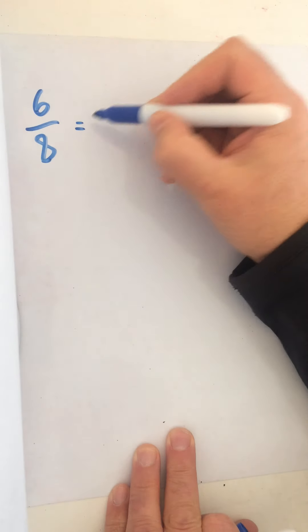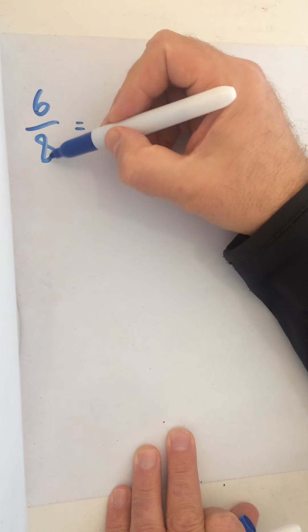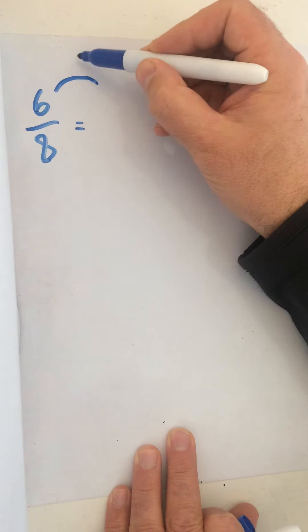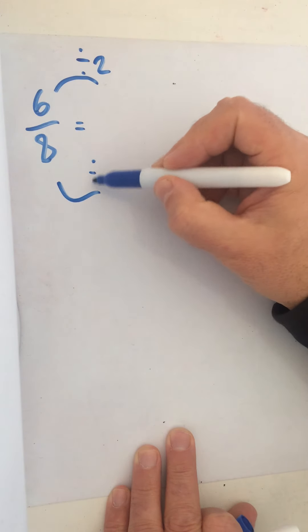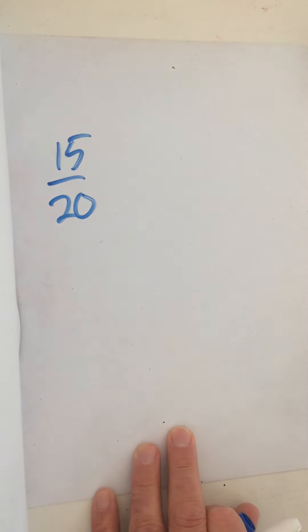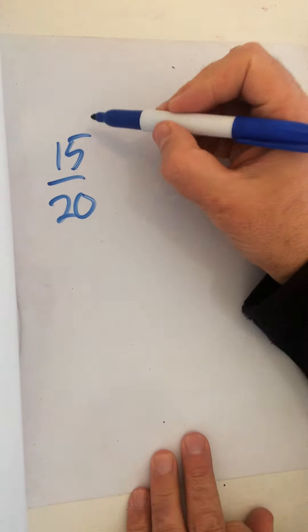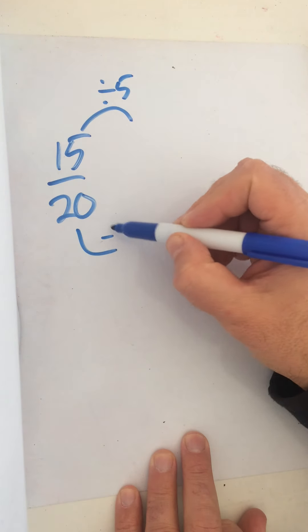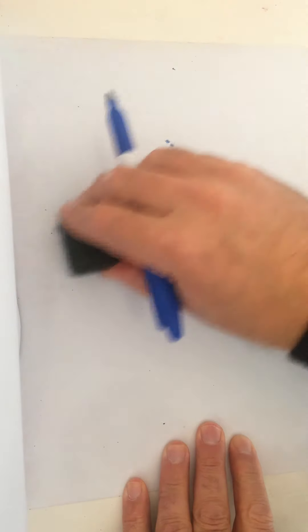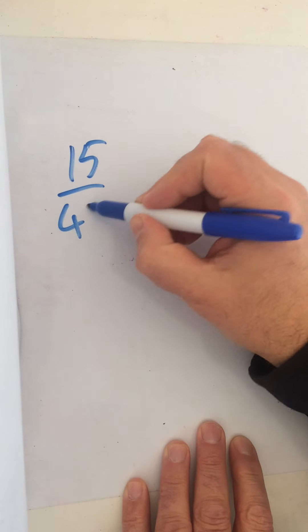Let's start off with simplifying. Sometimes you might get an answer of six eighths and you've got to simplify that to its lowest form. You divide both the numerator and the denominator — the numerator is the top number, the denominator is the bottom — by the same number. I can see two goes into both, so dividing both by two gives three quarters. You could also have fifteen twentieths — the highest common factor of 15 and 20 is five, so dividing both by five also gives three quarters.